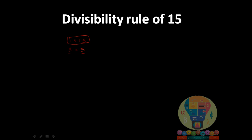Let's take the number 81,995. First, test with 3 — add all digits: 8+1+9+9+5 = 32, which is not a multiple of 3. So without even testing with 5, we can say that 81,995 is not divisible by 15, because it must be divisible by both numbers.